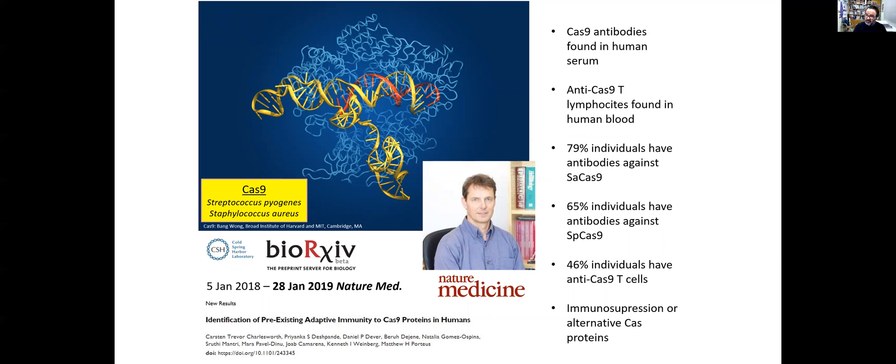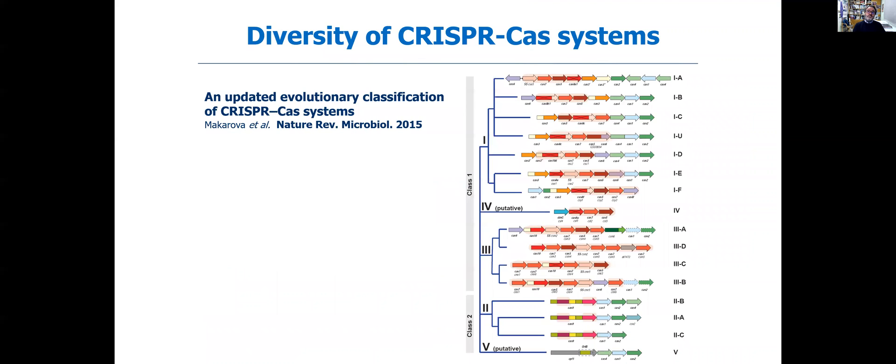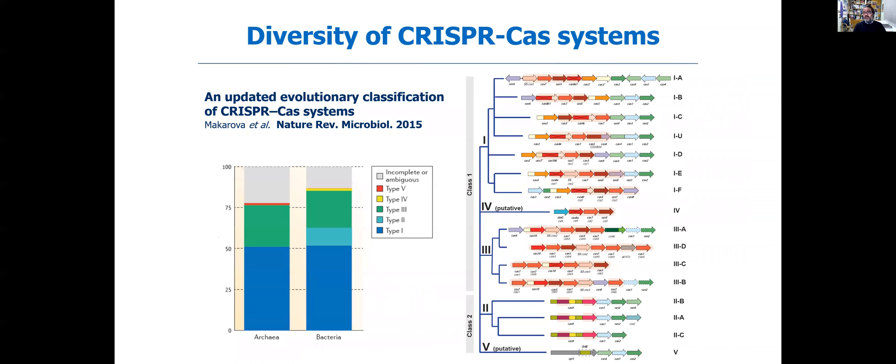And this is why he was not only detecting the problem, but he was also suggesting a solution. A solution could be immunosuppression or maybe the use of alternative Cas. This is important because there are many CRISPR-Cas systems. As many as 50% of the bacteria that are known, and those that are not known that we cannot cultivate, have CRISPR-Cas systems. Most of these CRISPR-Cas systems are not known. They need to be isolated. And as many as 80% of the archaea have also CRISPR-Cas systems.